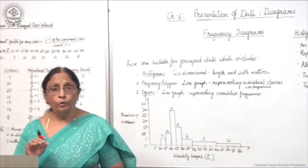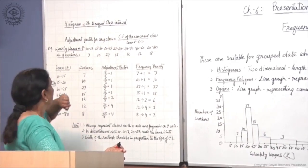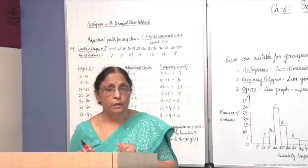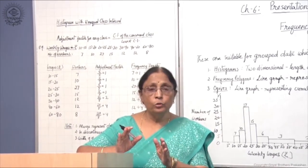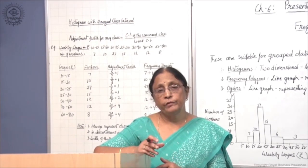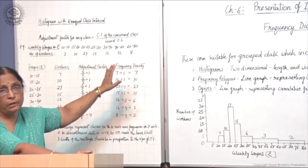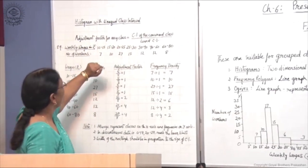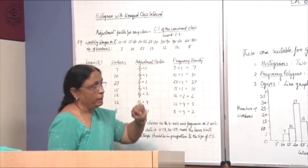Now let us take an example of unequal class interval and see how it is drawn. In the case of unequal class interval, you have to adjust the frequencies. Whatever frequencies are given in the unequal class interval, you have to convert them into frequencies of equal class interval using an adjustment factor. The adjustment factor for any class is equal to the class interval of the concerned class divided by the lowest class interval.